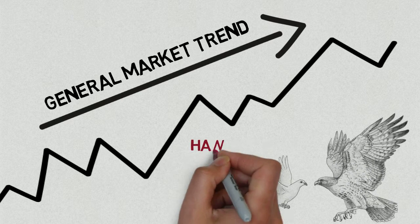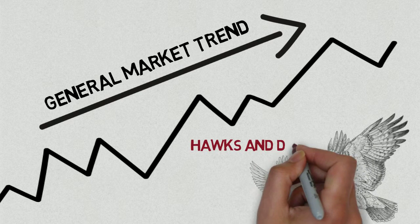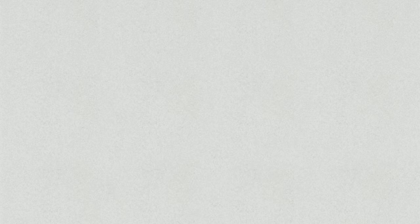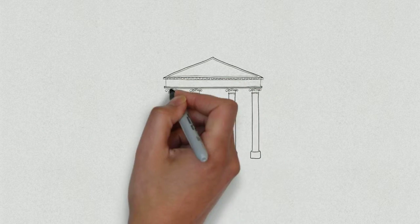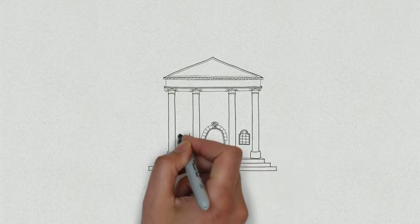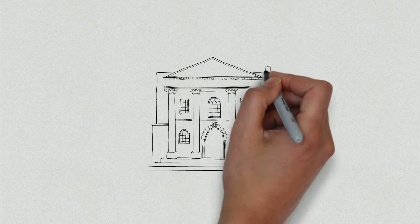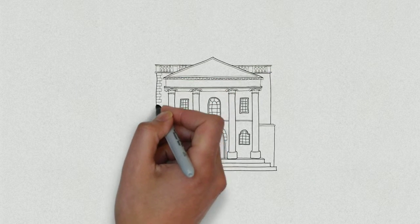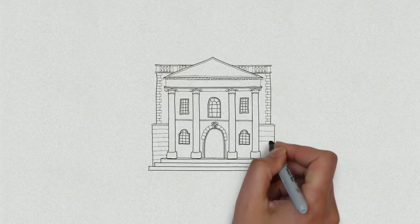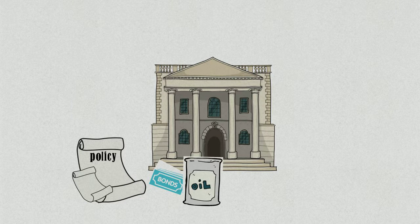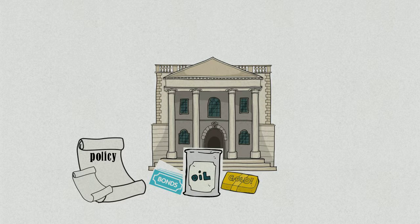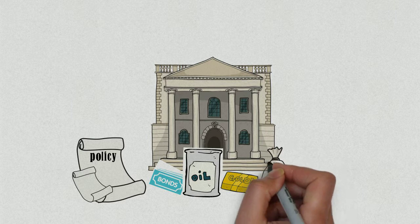We would like to introduce a concept here that we call Hawks and Doves. The policy stance of central banks and governments is one of the most important factors that influences the move of the market in medium and long term. Central banks and governments make policies and take steps that change the economic environment, and these changes affect the values of all asset markets in the economy.